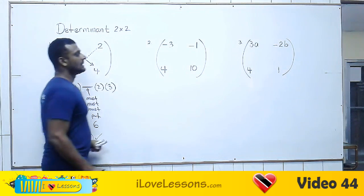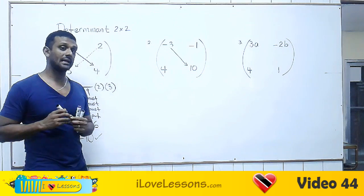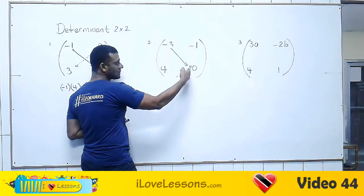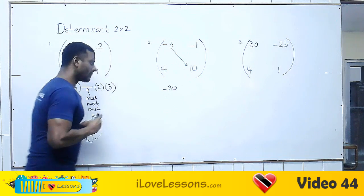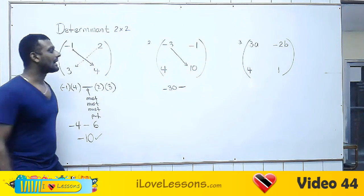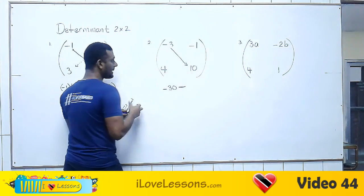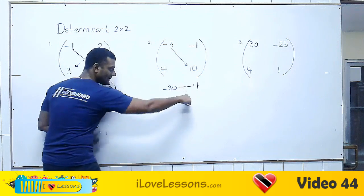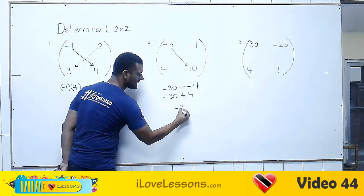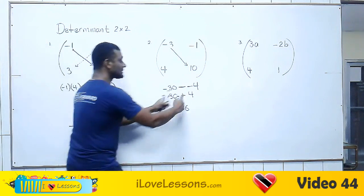Let's try another one — almost the same situation, just different numbers. This is the more important diagonal; we multiply it first. Minus three by ten is minus thirty. Remember the rule: as soon as you multiply the first diagonal, put a minus sign — you must put it. Then multiply the other diagonal: four multiplied by minus one is minus four. Notice two negatives touch — they came together, and when two negatives touch, you get a positive. So minus thirty plus four is minus twenty-six. Be on the lookout — sometimes two negatives come together, sometimes they don't.